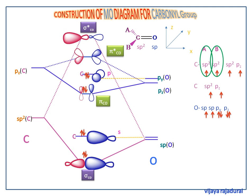CO has 10 valence electrons, of which two are used to bind A and B. The eight remaining electrons occupy sigma-CO, S, pi-CO, and P in the ground state. Hence, the highest occupied molecular orbital (HOMO) is P, and the lowest unoccupied molecular orbital (LUMO) is pi-star CO.